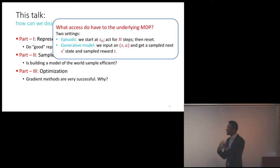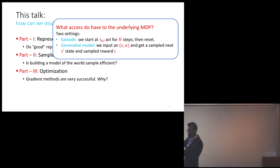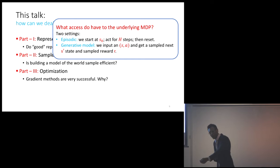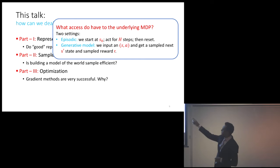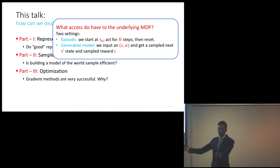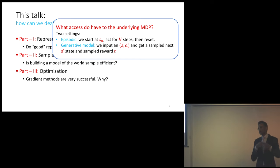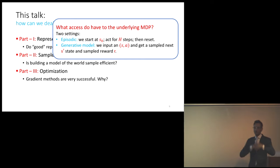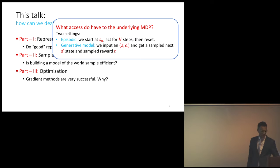It's helpful to think about two different models for how we access our environment. There's the episodic or lifelong setting: you start at some state, execute a policy for H steps, and reset to S0. We can also think about a generative model where, given a state-action pair as input, we get a sample of the next state. The generative model is a less realistic abstraction but is helpful for getting insight without the complexity of the full episodic model.